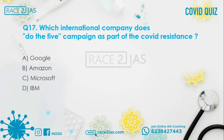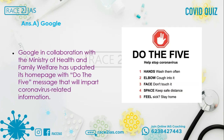Question number 17: Which international company ran the 'Do the 5' campaign as part of COVID resistance? Option A: Google. Option B: Amazon. Option C: Microsoft. Option D: IBM. The right answer is Option A, Google. Google, in collaboration with the Ministry of Health and Family Welfare, updated its homepage with the 'Do the 5' message to impart coronavirus-related information.